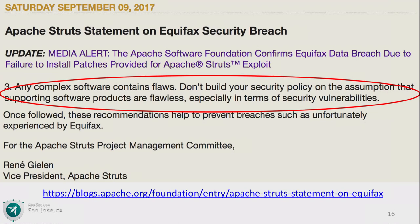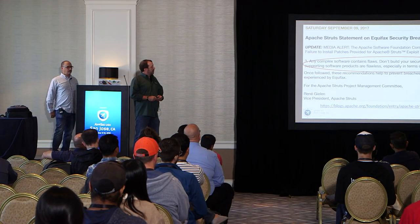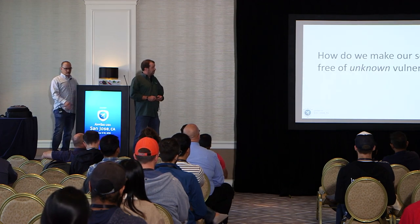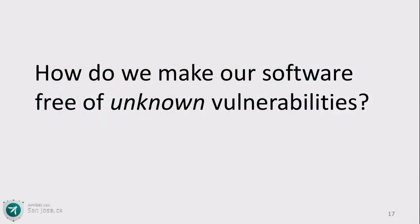Let's go back to the Apache Struts statement — number three: any complex software contains flaws. Don't build your security policy on the assumption that supporting software products are flawless, especially in terms of security vulnerabilities. How do we secure our software from unknown vulnerabilities? It's not like there's going to be a tool that can scan your software and say you have an unknown vulnerability — that's impossible. I would assert that the list of unknown vulnerabilities is larger than the list of known vulnerabilities.